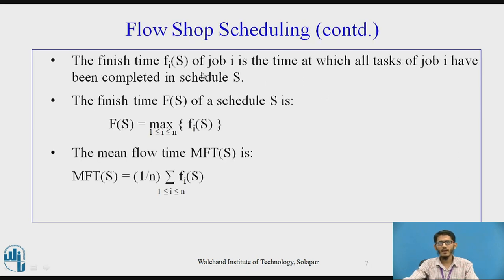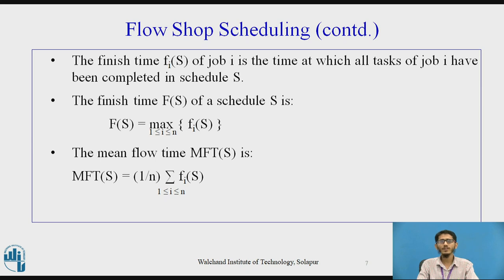The finish time fi(S) of a job i is the time at which all the tasks of job i have been completed in schedule S. The finish time F(S) of the schedule S is given as F(S) = maximum of fi(S) where i ranges from 1 to n — meaning the finish time of the schedule is the maximum finish time among all jobs in that schedule.